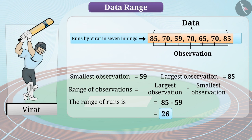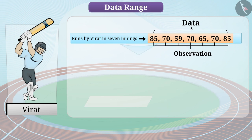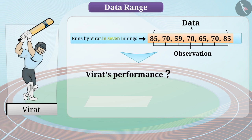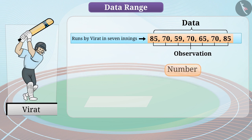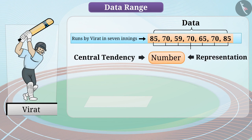The range of data provides us with detailed information, such as the extension of data being from 59 to 85. However, it is difficult to get information about Virat's performance in all his innings by looking at these figures, as his performance must have varied. In such situations, we need a number that can represent this group of observations — a central tendency for the entire data set, called a representative value or central value.